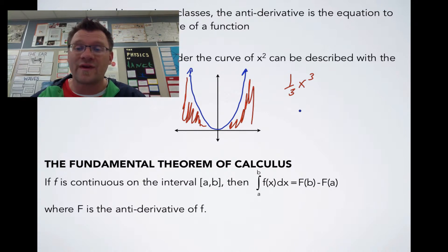we would write it like this: the integral from 1 to 3 of x² dx would then equal the antiderivative, which we said is 1/3. Now, we plug in the value for b, which would be 3.